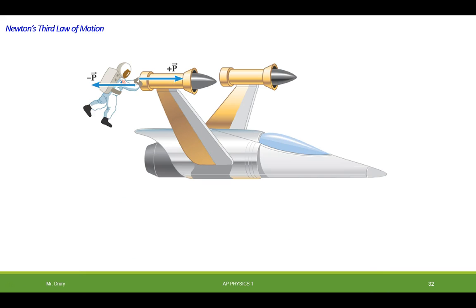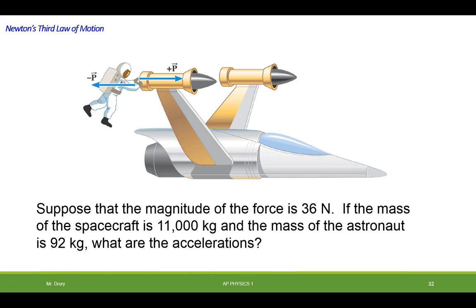Okay, here's an example of Newton's third law. You have an astronaut pushing a spacecraft. He pushes forward with a push of P, and the rocket has to push back with a push of negative P. Newton's third law. A pushes B, B pushes A. And suppose the magnitude of the force is 36 Newtons, and the spacecraft has a mass of 11,000 kilograms, and the astronaut is 92 kilograms. What are the resulting accelerations? Now, the forces are equal, but it does not mean the accelerations will be equal, as you can see using Newton's second law.